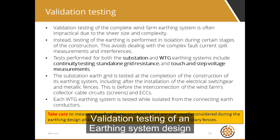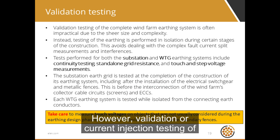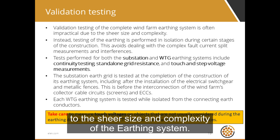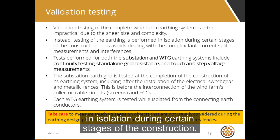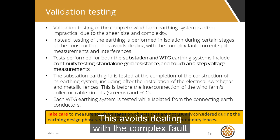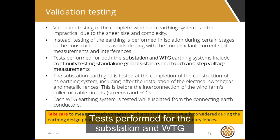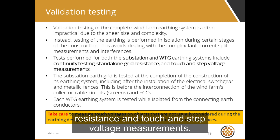Validation testing of an earthing system design is an important final step. However, validation or current injection testing of the interconnected wind farm earthing system is often impractical due to the sheer size and complexity of the earthing system. Testing of the earthing is performed in isolation during certain stages of construction, avoiding complex fault current split measurements and interferences. Tests performed for the substation and WTG earthing systems include continuity testing, standalone grid resistance, and touch-and-step voltage measurements.